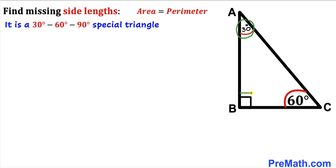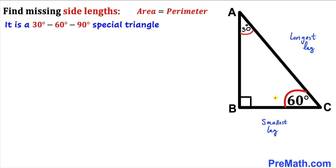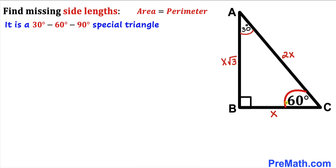Here, 30 degrees is our smallest angle and 90 degrees is our largest angle. The side opposite the smallest angle is our smallest leg, and the side opposite the largest angle is the hypotenuse. In a 30-60-90 triangle, the hypotenuse is twice the smallest leg. If the smallest leg is x, the hypotenuse is 2x, and the third leg is x times square root of 3.